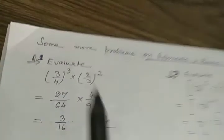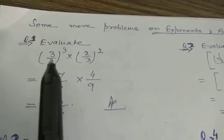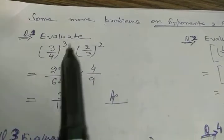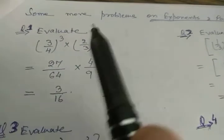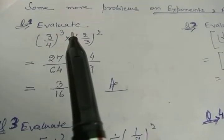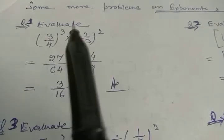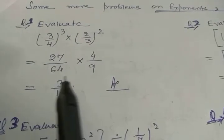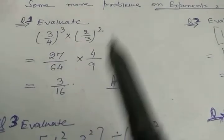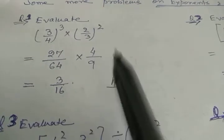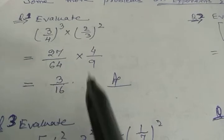The first problem: simplify (3/4)³ × (2/3)². Here we simply simplify. 3 to the power 3 means 3×3×3 = 27, and 4 to the power 3 means 4×4×4 = 64. In the same way, 2 to the power 2 is 4 and 3 to the power 2 is 9. Now try to cancel — the result is 3 by 16.